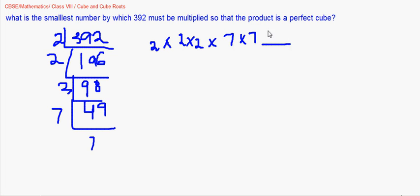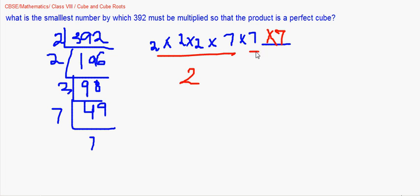From the prime factorization 2 × 2 × 2 × 7 × 7, the 2s already form a group of three, but we only have two 7s. If we had another 7, it would complete the group. So multiplying 392 by 7 gives us 2³ × 7³ = 14³. The answer is 7.